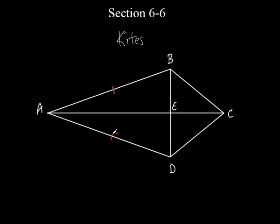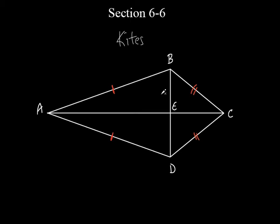There are exactly two pairs of consecutive equal sides. These two — AB and AD — are equal to each other, and the other two that are next to each other, BC and CD, are equal to each other as well. So on a kite, you have exactly two pairs of sides that are next to each other, actually congruent to each other.